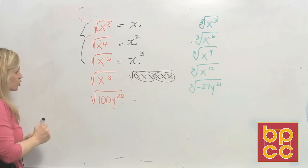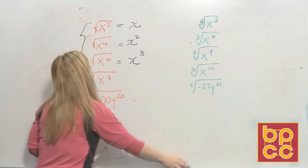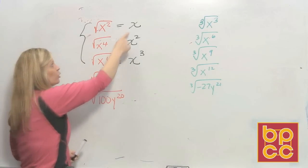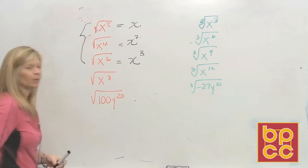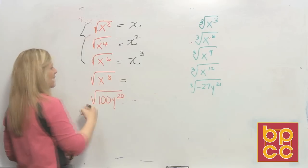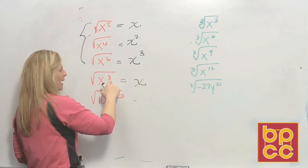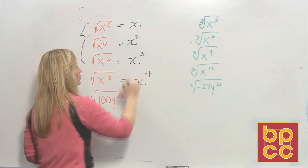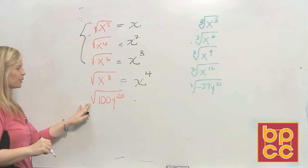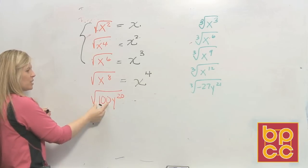So we have a simple rule we can do in our head: to square root a variable, you divide the exponent by two. Knowing that, what is the square root of x to the eighth? That would be x to the fourth, because eight divided by two is four. Now in this next example in your notes, not only do we have a variable, we also have a number.